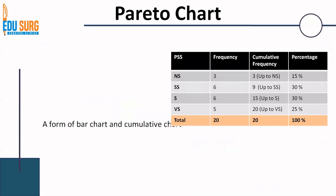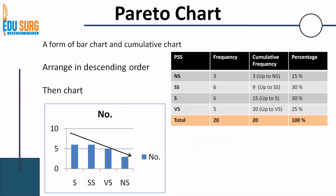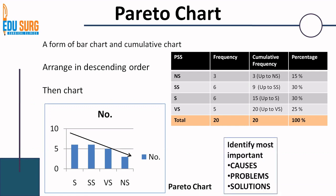There is also something known as a Pareto chart, which is very similar to a bar chart and cumulative chart. The difference is that in a Pareto chart, you arrange the data in descending order of frequency. For our data, satisfied and somewhat satisfied have the highest frequency — both are 6. So you put those two bars before very satisfied and not satisfied. This is the same data but arranged in descending order, which is known as a Pareto chart. The important thing is that it gives you very visual information on the most important cause, problem, or solution. By looking simply at this chart, you can easily make out that satisfied and somewhat satisfied are the most commonly occurring categories, and very few patients are not satisfied.